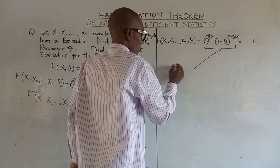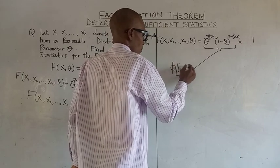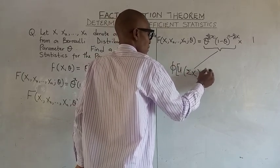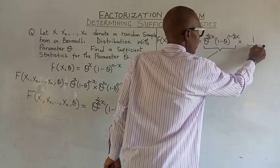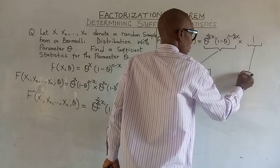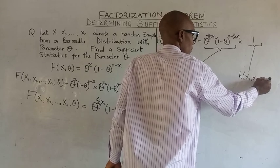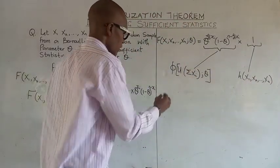So the whole of this will give us a phi mean summation xi while this will give us this function. So from this, we can say that